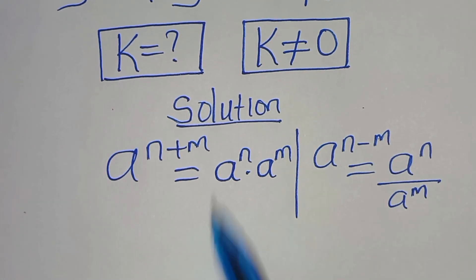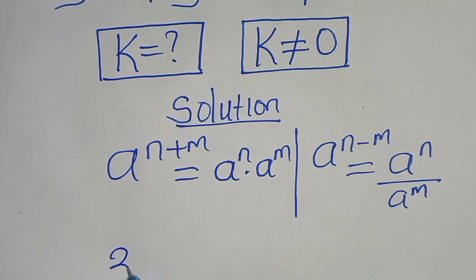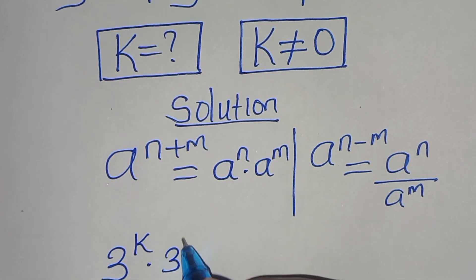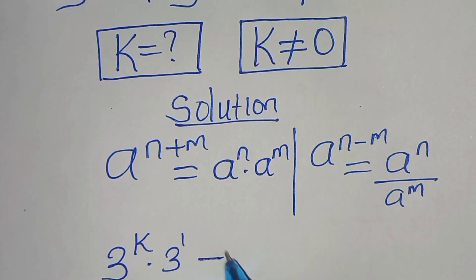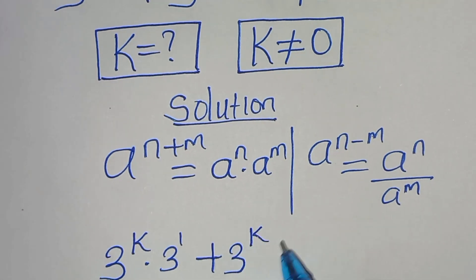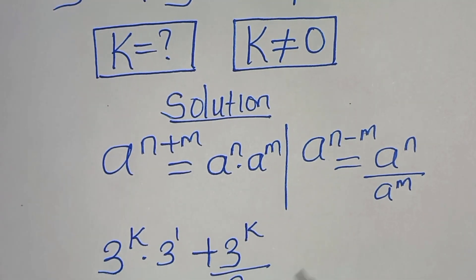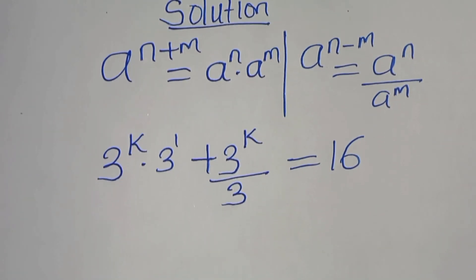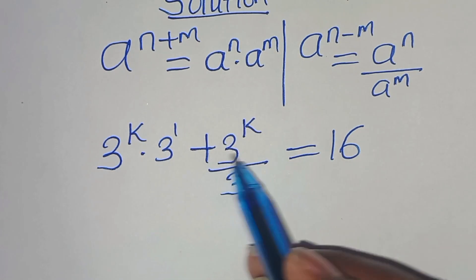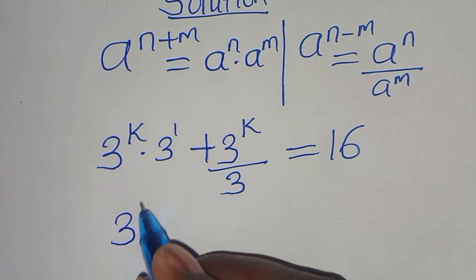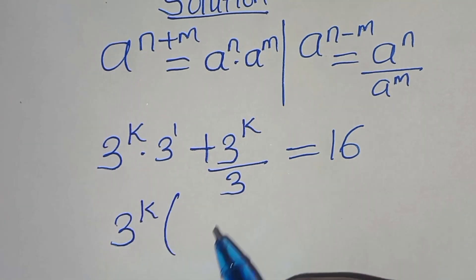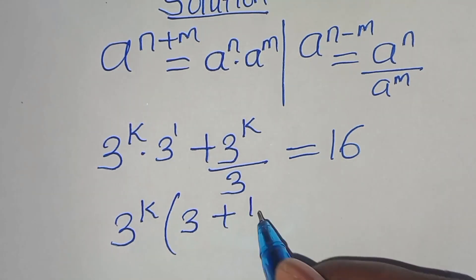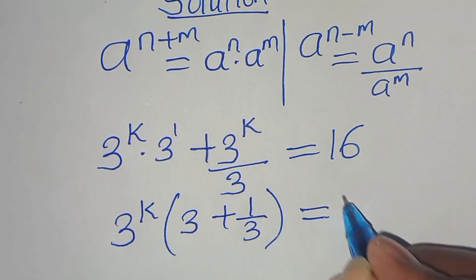Applying these two exponent properties, we have 3^k times 3^1, plus 3^k divided by 3, all equal to 16. Now 3^k is common in both terms, so we can factor it out, giving 3^k times (3 + 1/3) = 16.